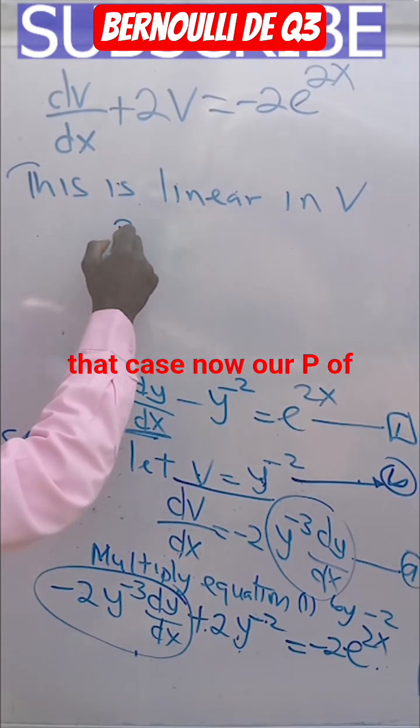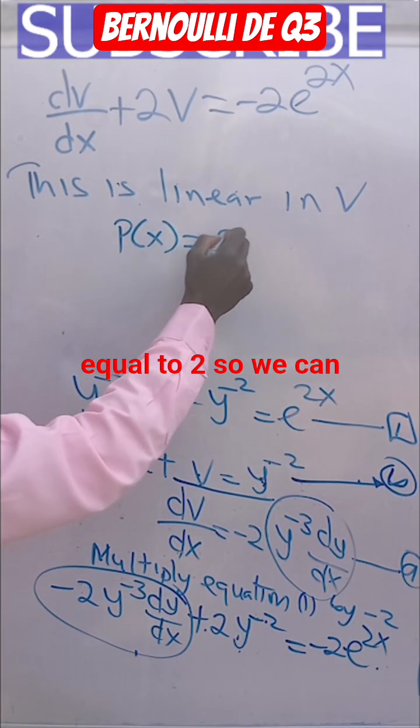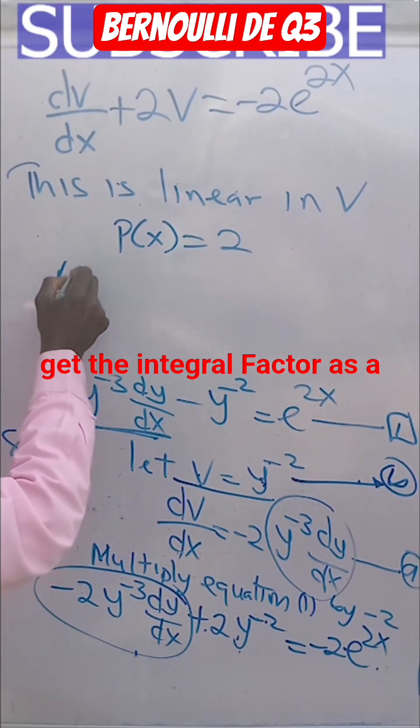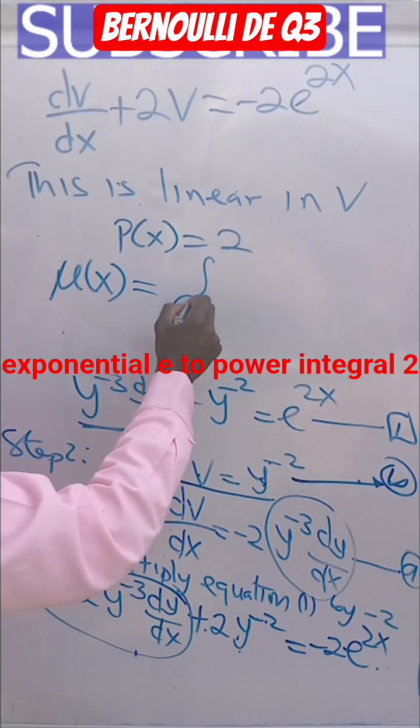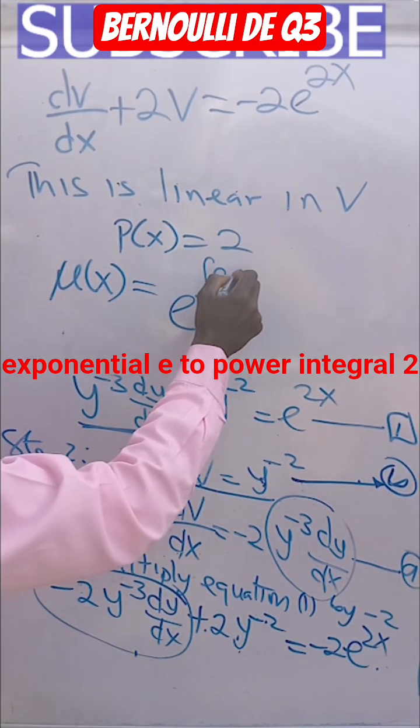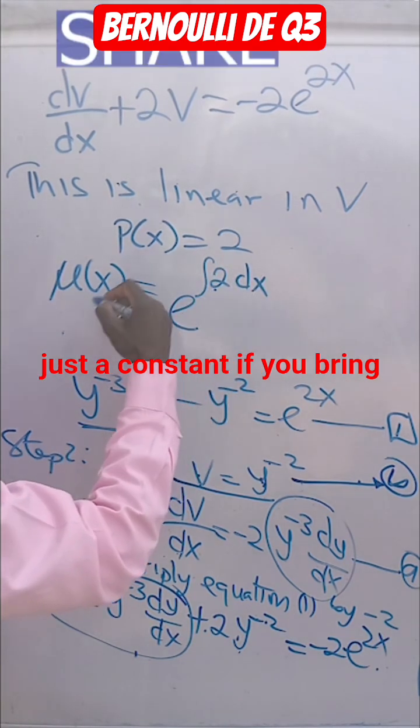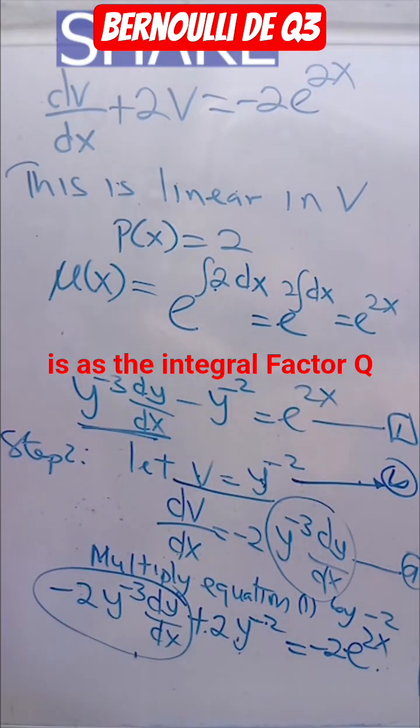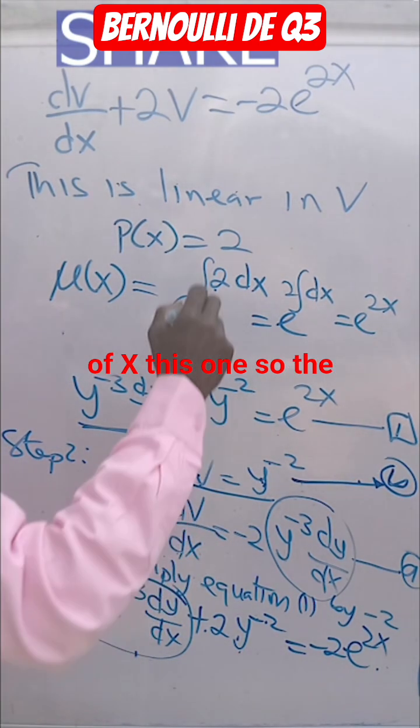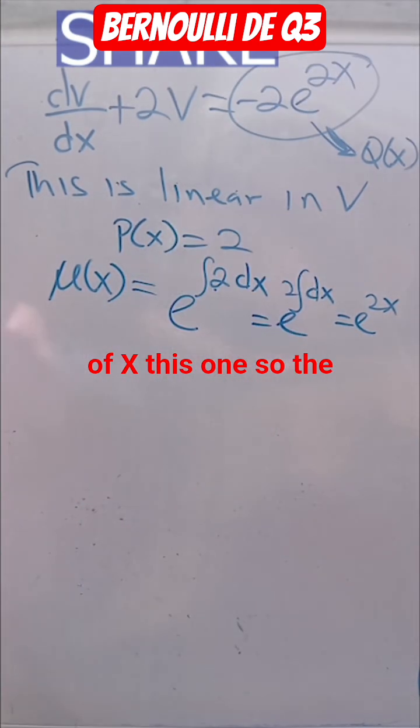So in that case now our P of X is equal to 2. So we can get the integrating factor as e to power integral 2 dx. It's really just a constant you take it out, then you have the integrating factor. Q of X is this one, so the general solution...